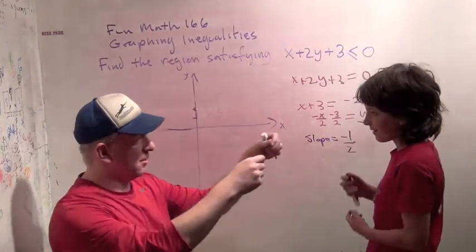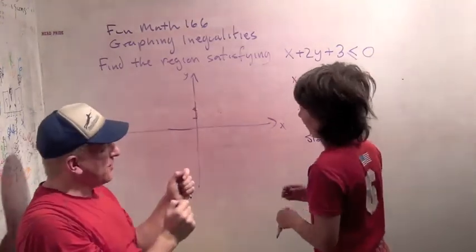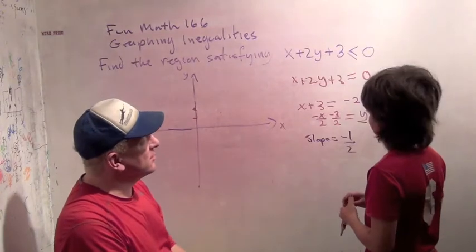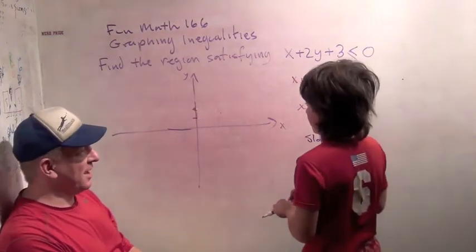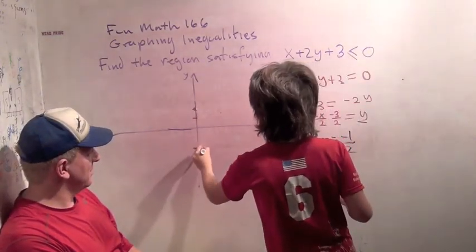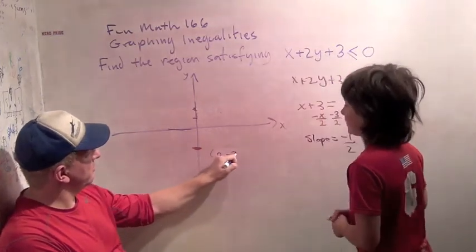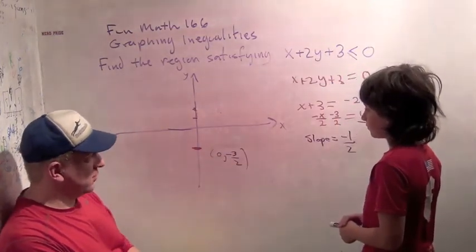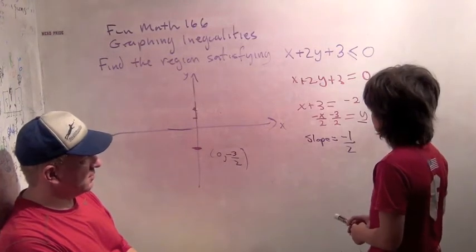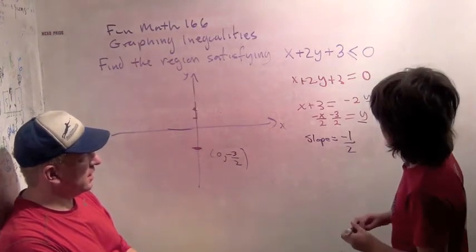Let's start again. Rewind. Where's the point 0, minus 3 halves? Around this one. So let's call this 0 minus 3 halves. What is x when y equals 0, by the way, in this problem? When x equals 0, what does y equal? When y equals 0, what does x equal?